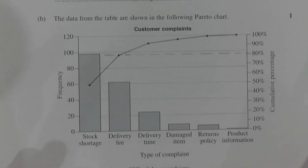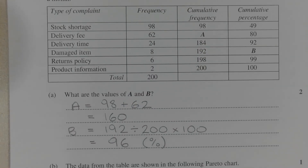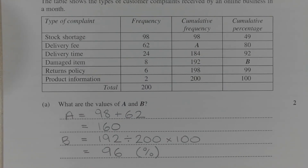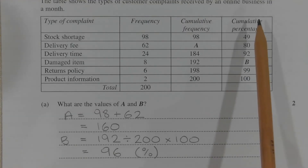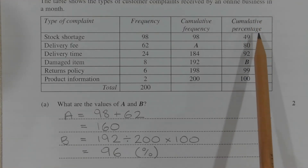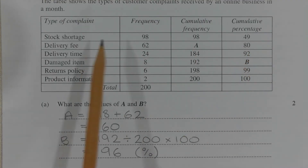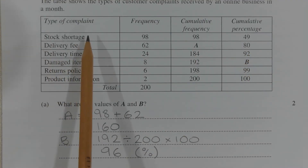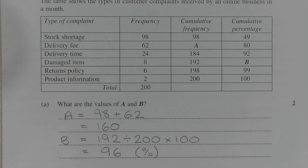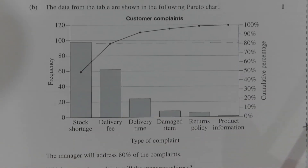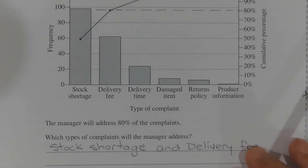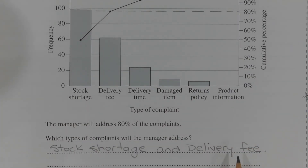The other way of answering this question is to refer to the table, and in particular the cumulative percentage column, where we can see that 80% of the complaints involve delivery fee or stock shortage. So either way, the manager will address stock shortage and delivery fee, which represent 80% of the complaints.